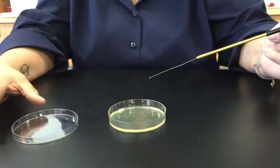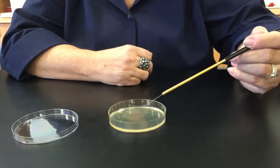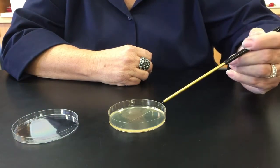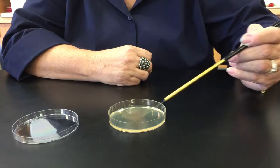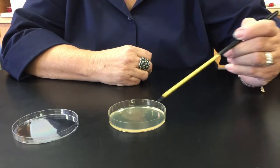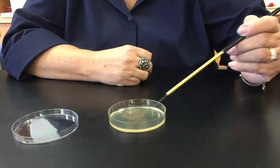Alright, so what I'm going to do is I'm going to enter the plate with my loop and I'm going to streak out my first quadrant. I want to make as many passes as I can in that first quadrant, trying not to gouge the agar.